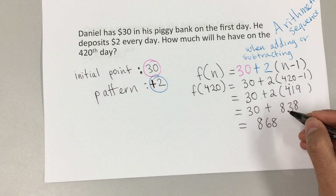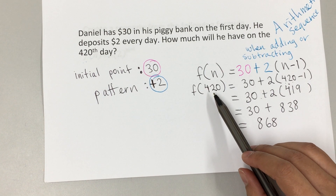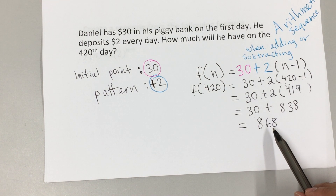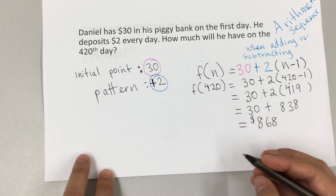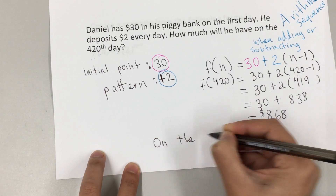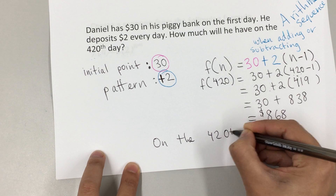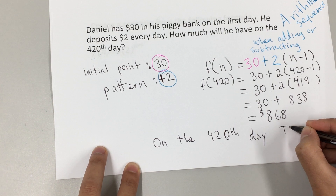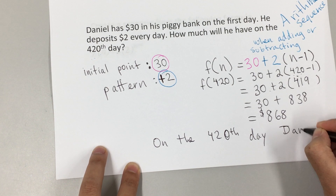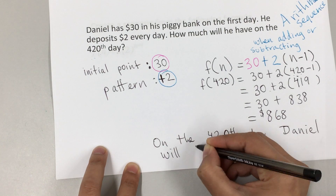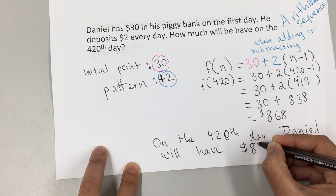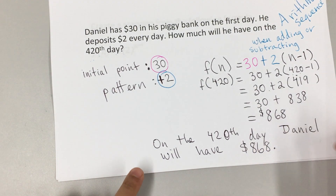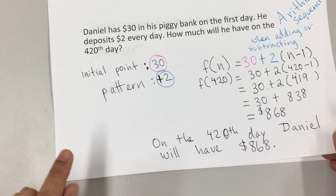So on the 420th day Daniel will have 868 dollars. I should have written the other answer in a complete sentence too, but I'll leave it at that.